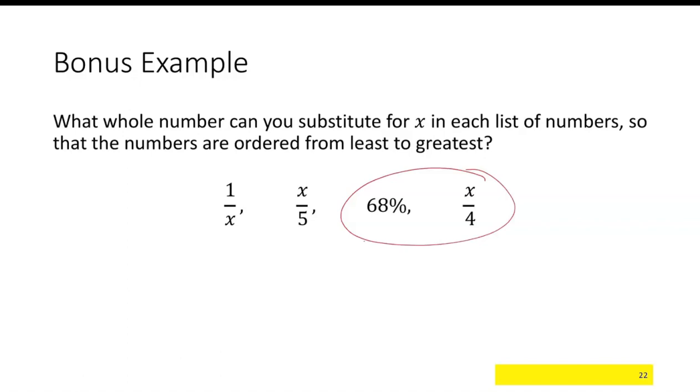X to be large enough so that X over 4 is more than 68%. So one-fourth is 25%. Two-fourths is 50%. Three-fourths is 75%. So this is telling me that X is equal to 3 or larger.